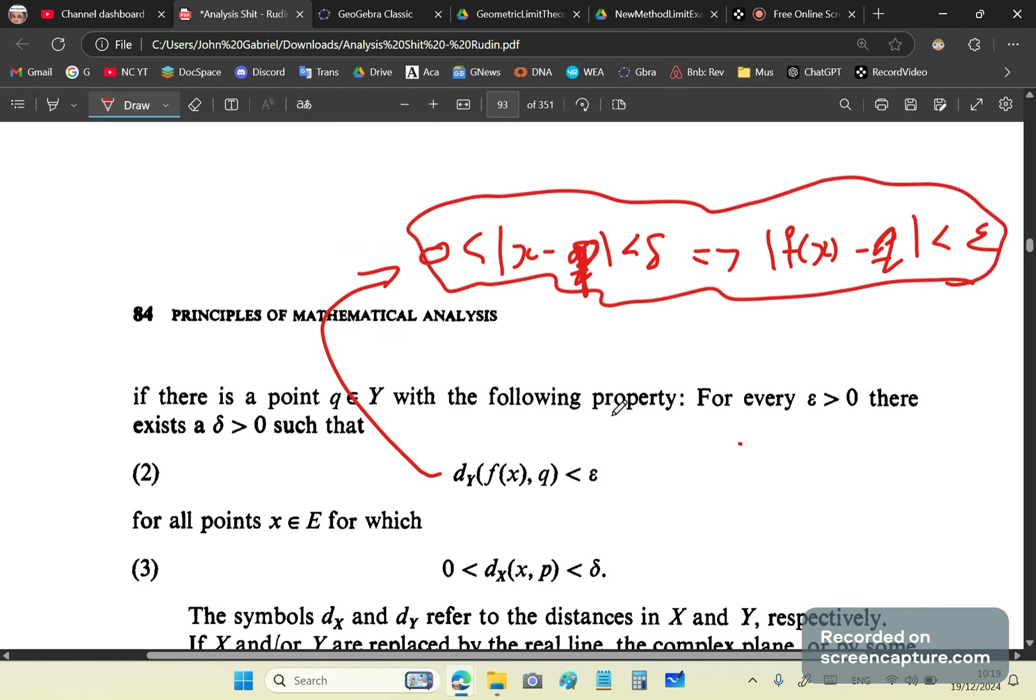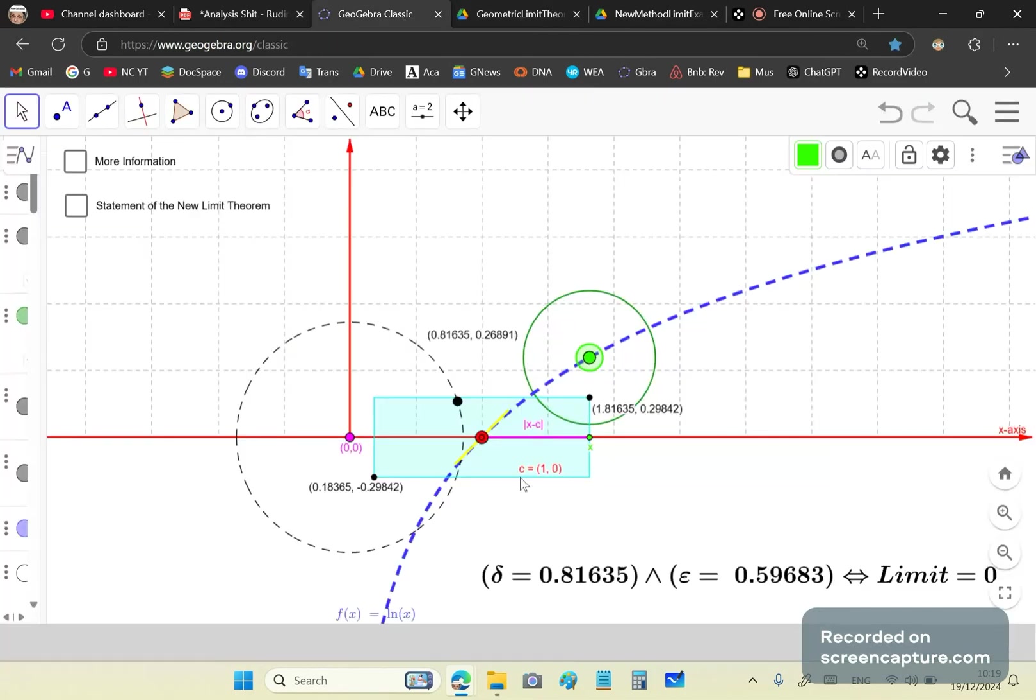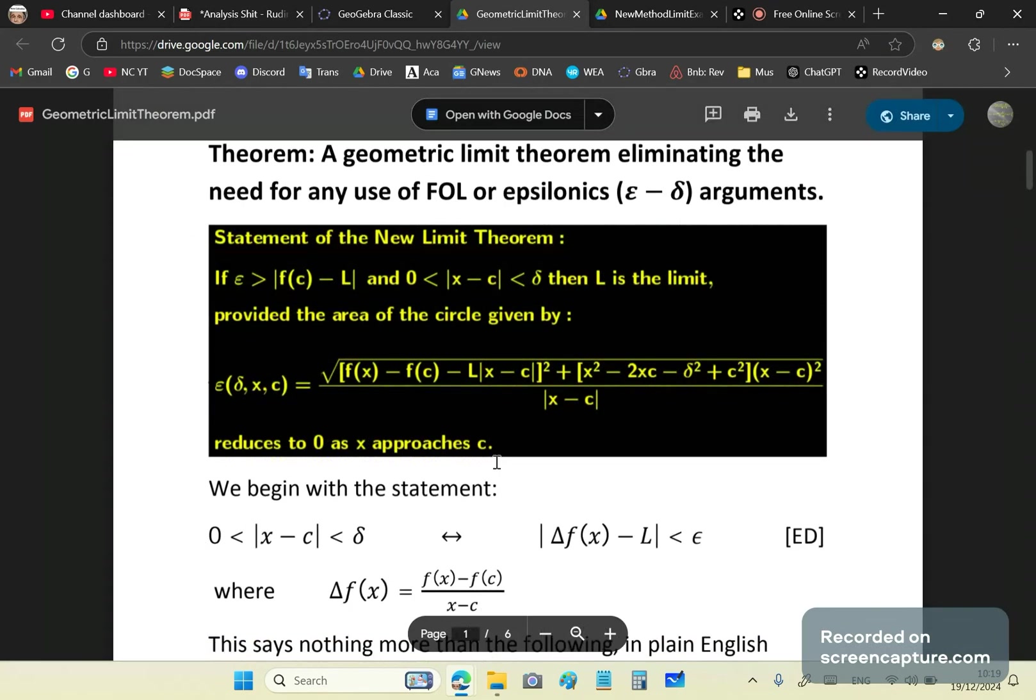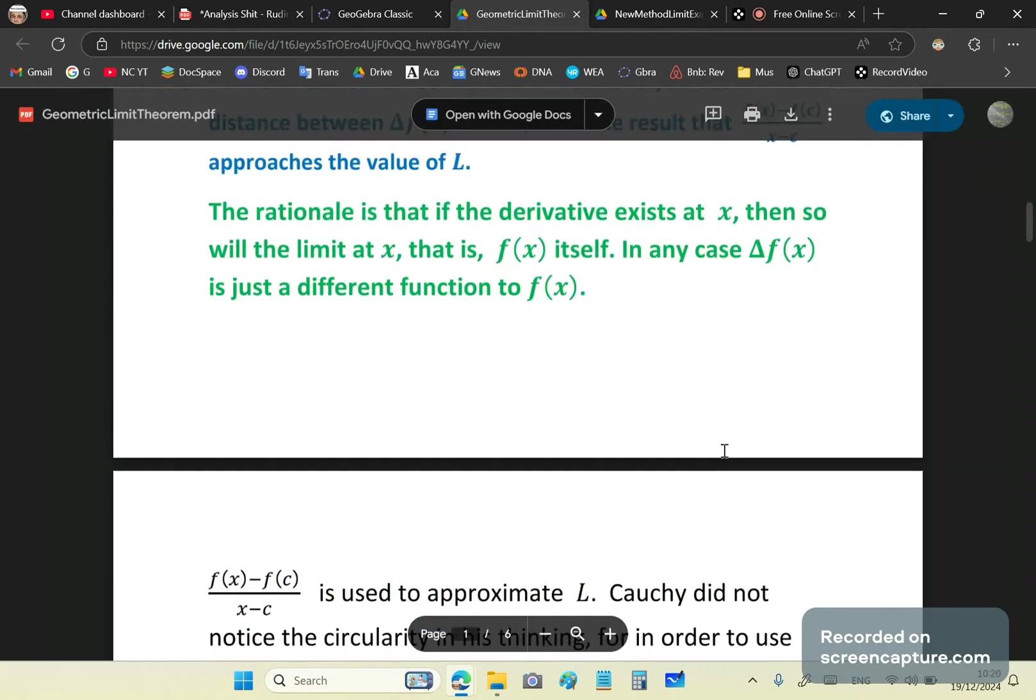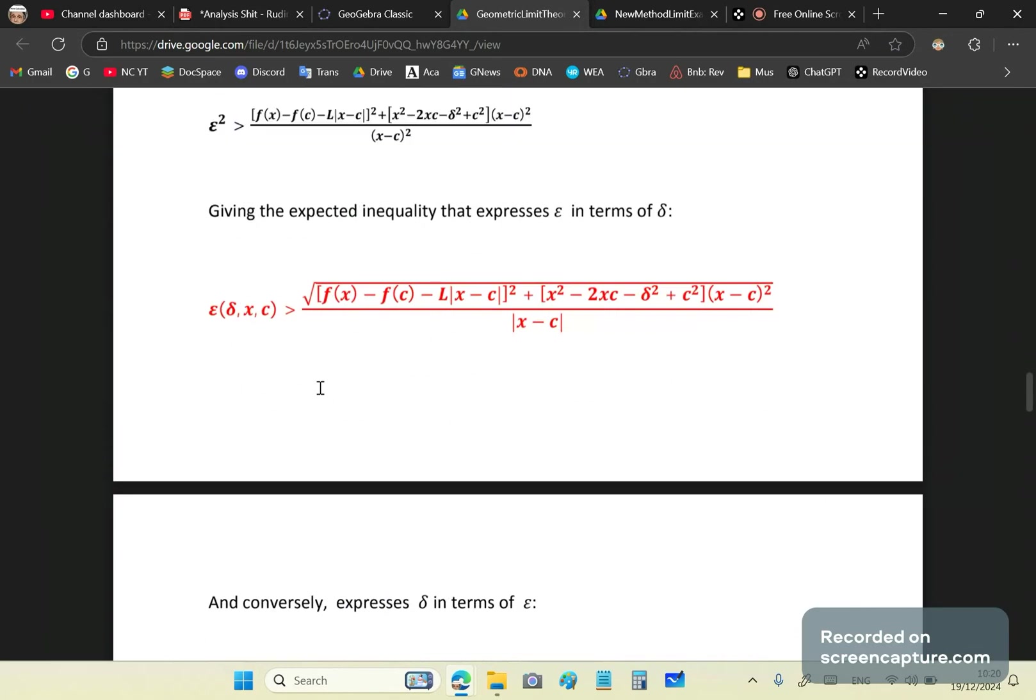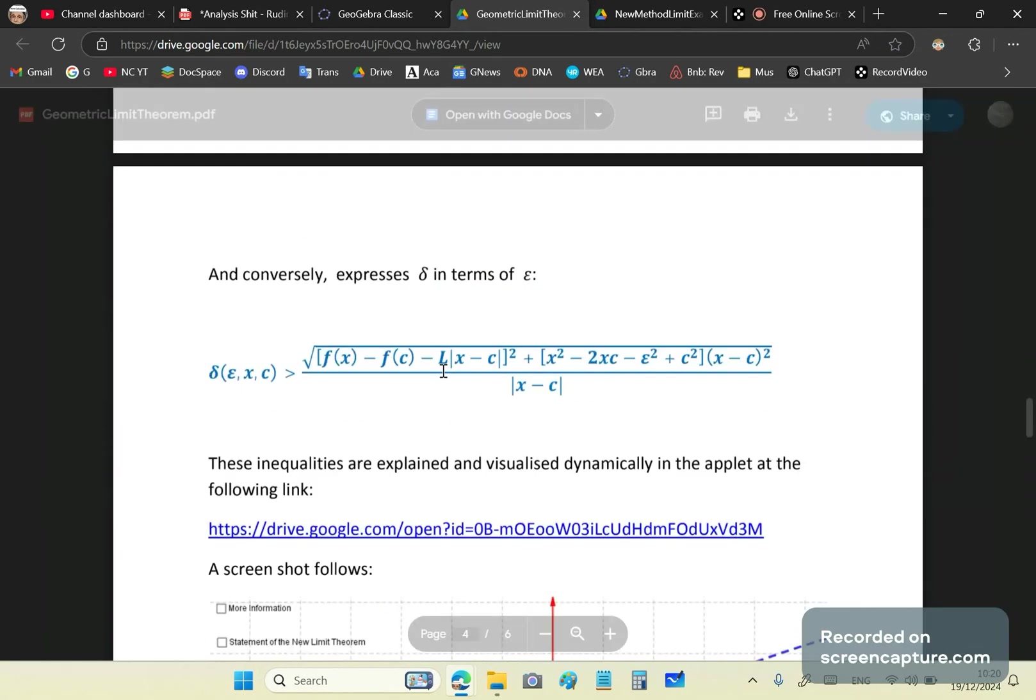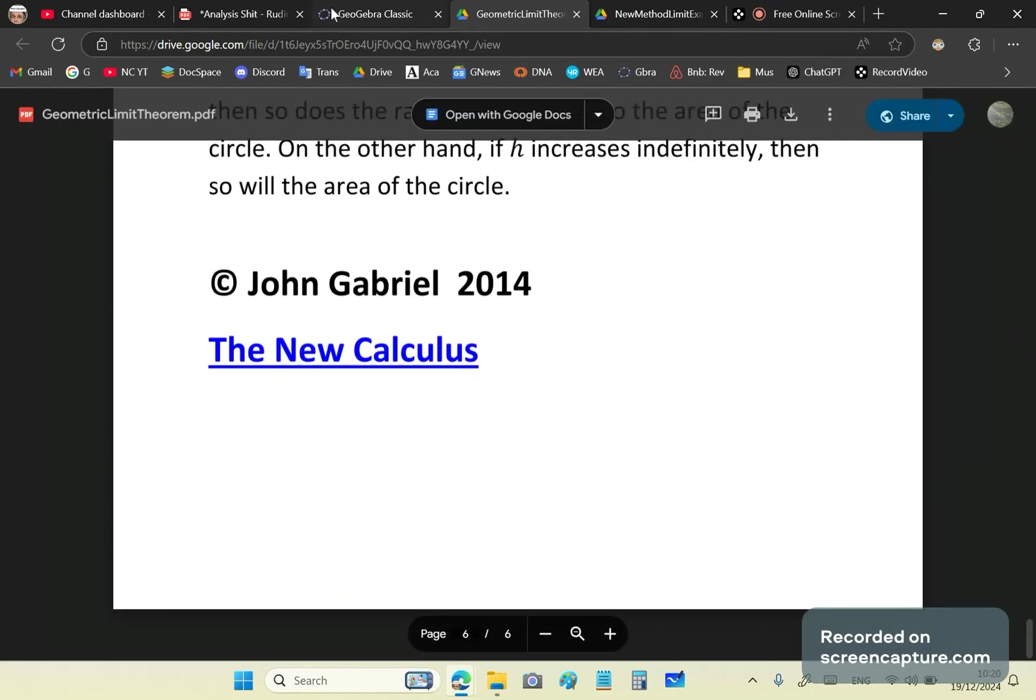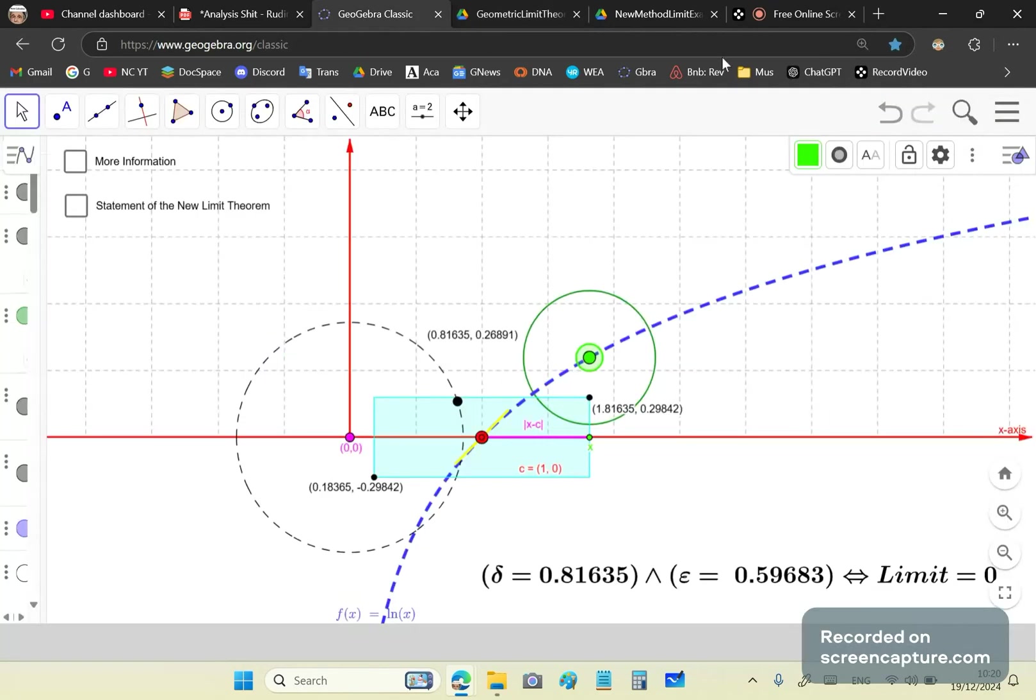I'm going to explain to you what was going on in that Austrian Jew's mind, because I'm a genius and I have very deep perception. If we look at this, this is a geometric limit theorem that I came up with. I'm not going to go through the derivation, but you can read this article and see how I came up with this formula, which expresses epsilon in terms of delta and conversely delta in terms of epsilon.